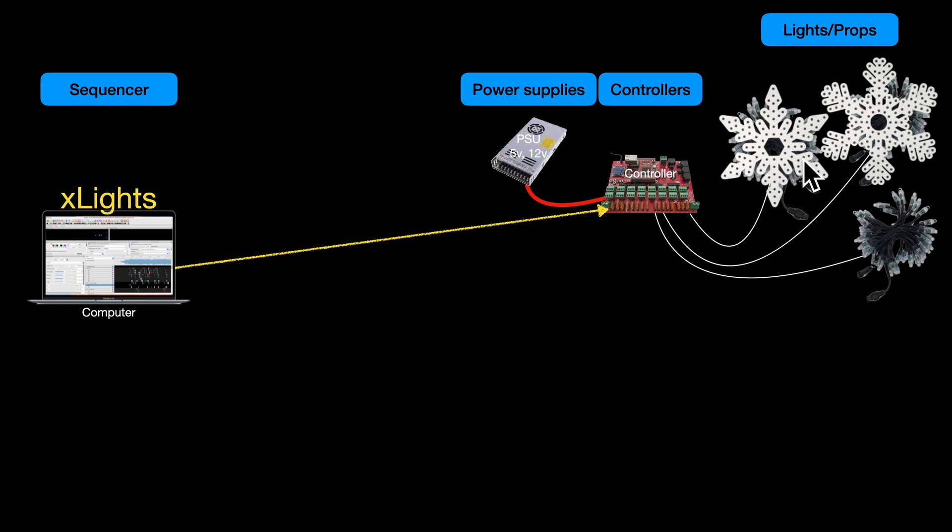Obviously the lights are all low voltage, they're not mains voltage. They'll typically be 5 volt or 12 volt pixels, so you need a power supply to drive them. The power supply, typically it would be 5 volts or 12 volts, can be 24 volts, but I'll explain that in another video later. The power supply is generally connected to the controller, not always, but most of the time it is. Then each of the props is connected to a port on the controller, and that's basically three wires.